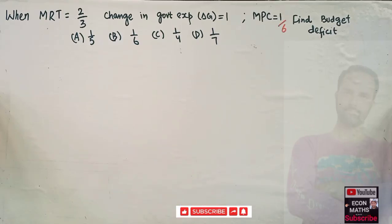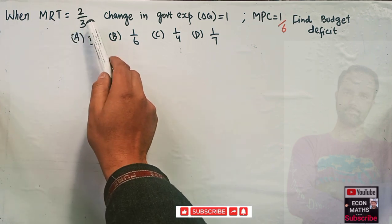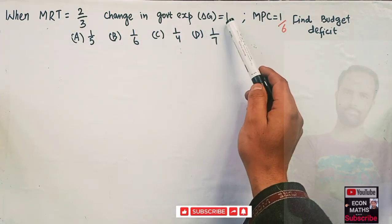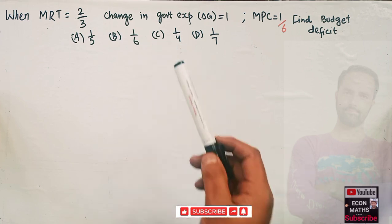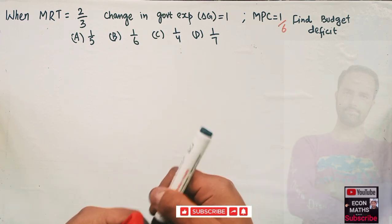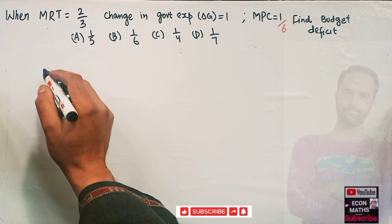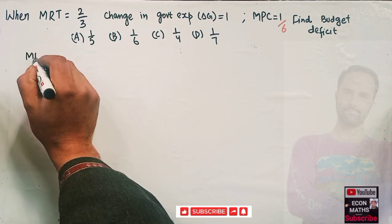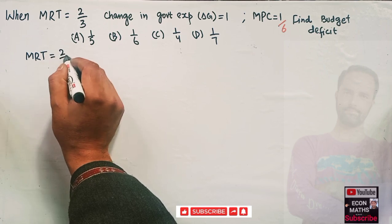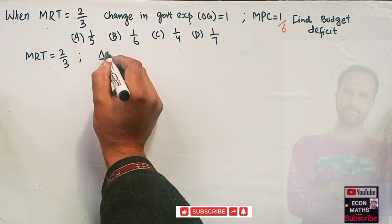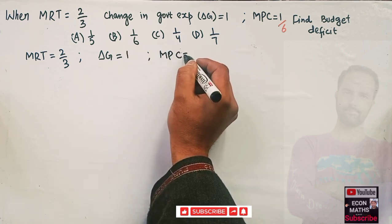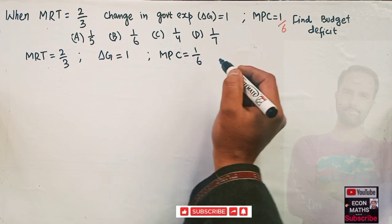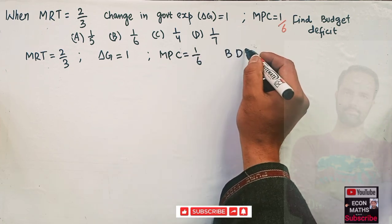In this video we will solve a problem on finding budget deficit. The given values are: marginal rate of tax is 2/3, change in government expenditure (ΔG) is 1, and marginal propensity to consume (MPC) is 1/6. We have to find the budget deficit. The options are 1/5, 1/6, 1/4, or 1/7.